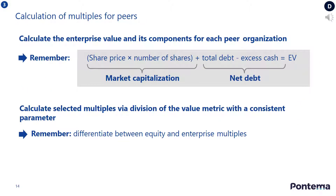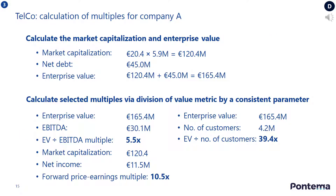The fourth task is to calculate the multiples for the peer group of comparable organizations. Start by calculating either the enterprise or equity value for each peer organization, then divide by the appropriate value metric such as EBITDA or number of customers. For the telco case study, the slide shows how you would calculate the multiples for company A in the peer group. Take some time to work through the calculations and repeat the exercise for the other companies in the peer group.